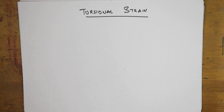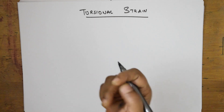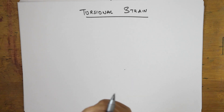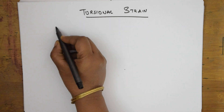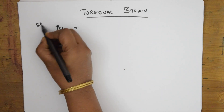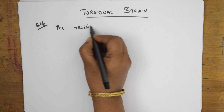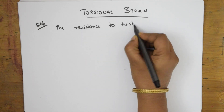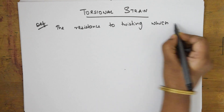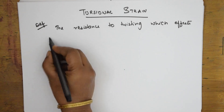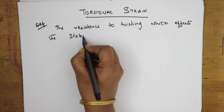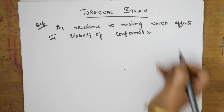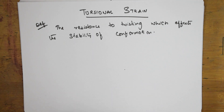So torsional strain is nothing but a resistance because of the repulsion existing between adjacent carbon atoms. Let us write the definition: torsional strain is the resistance to twisting which affects the stability of conformations.